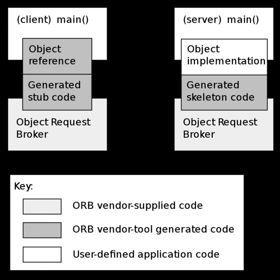CORBA can facilitate communication among distributed objects. Object references are acquired through a stringified uniform resource locator, name service lookup, or passed in as a method parameter during a call. Object references are lightweight objects matching the interface of the real object. Method calls on the reference result in subsequent calls to the ORB and blocking on the thread while waiting for a reply, success or failure. The parameters, return data, and exception data are marshaled internally by the ORB according to the local language and OS mapping.